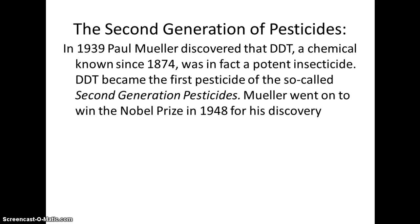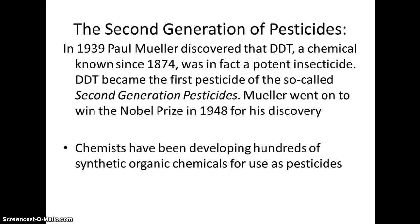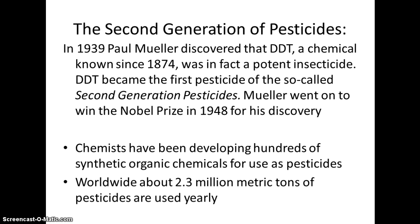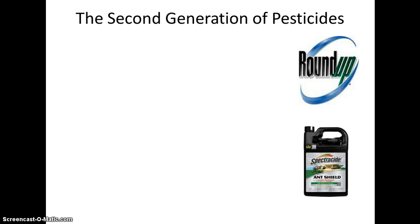The second generation of pesticides were those we created chemically. Paul Mueller was the first to discover that DDT — a chemical already in existence — was a very effective insecticide. He won a Nobel Prize for this in 1948. Since then, we have been developing hundreds of synthetic organic chemicals used as pesticides. We now use about 2.3 million metric tons of pesticides worldwide each year.